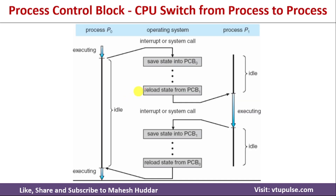Moving a process from one state to another can be shown with respect to this diagram, which illustrates a CPU switch from process to process. Consider two processes, P0 and P1. Initially, P0 is executing on the CPU. After some time, P0 needs an I/O device service, so it is moved from CPU to waiting state, and the CPU goes idle. Whatever current information about P0 is available is saved into PCB 0. This allows us to reload P0 later and continue from where it left off.